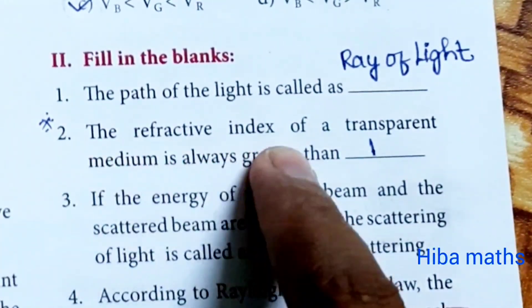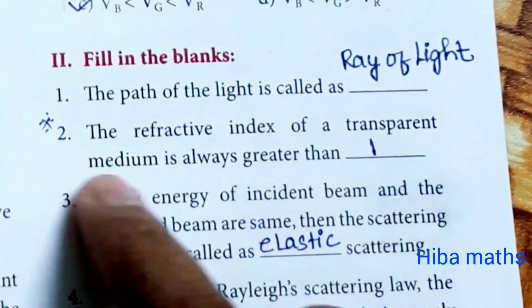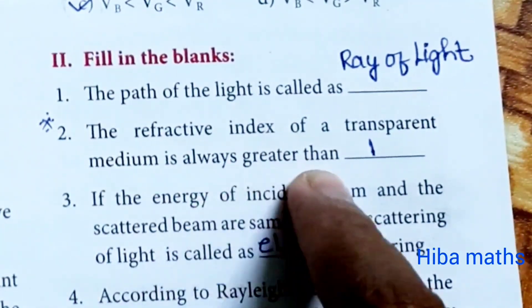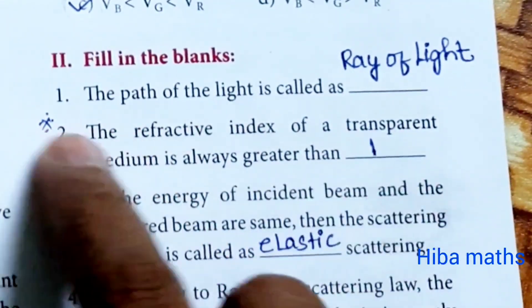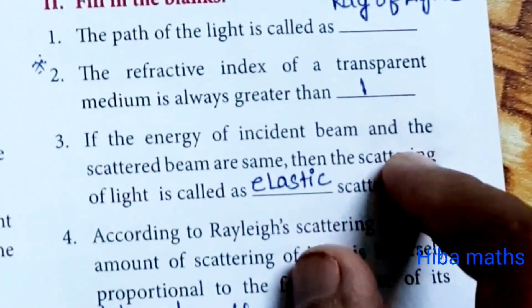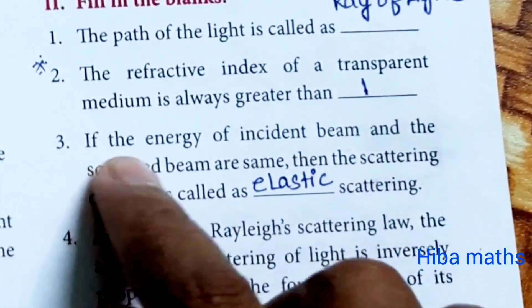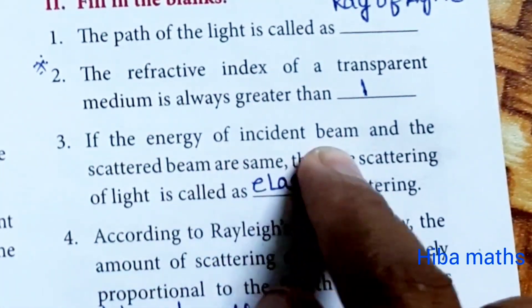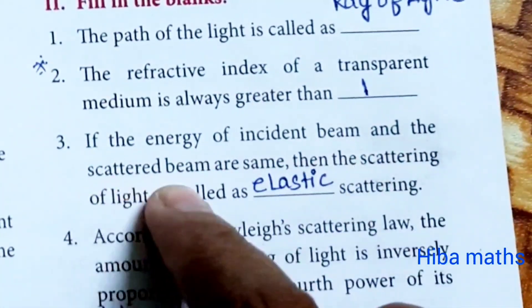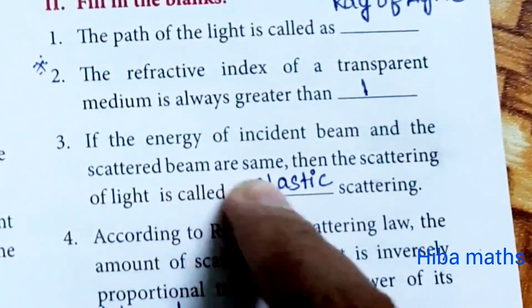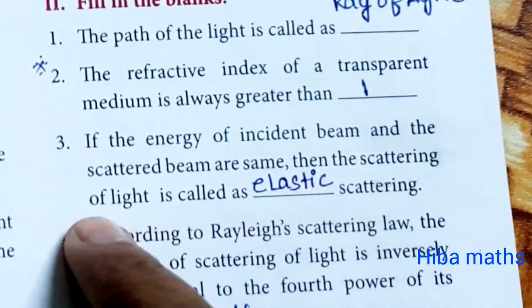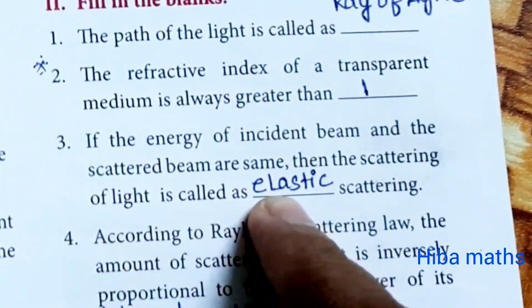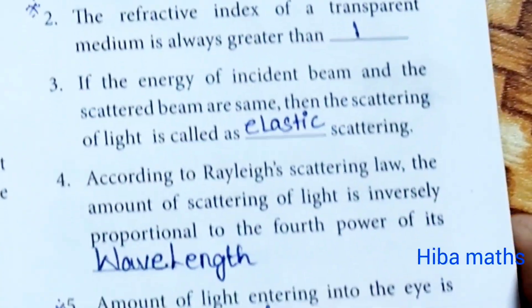Fill in the blanks. The path of light is called a ray of light. The refractive index of a transparent medium is always greater than 1. If the energy of the incident beam and the scattered beam are the same, then the scattering of light is called elastic scattering.